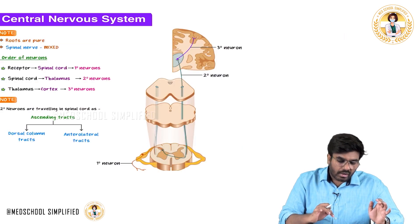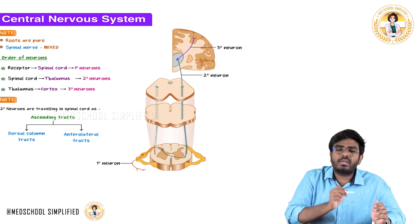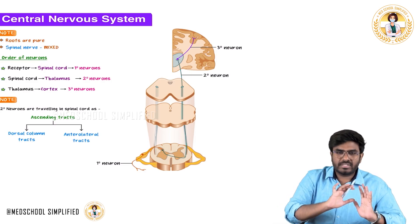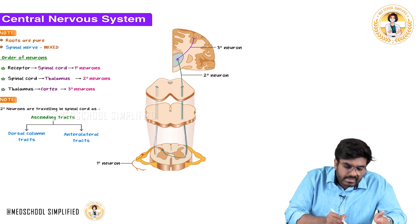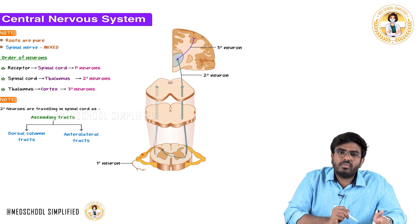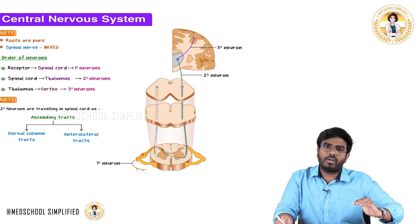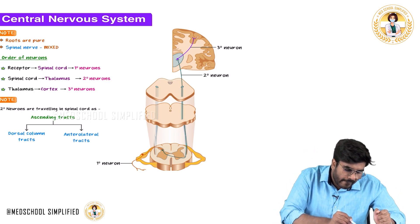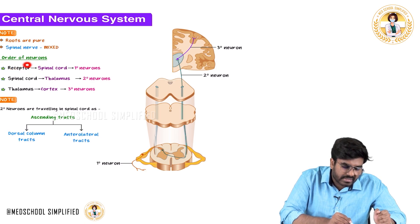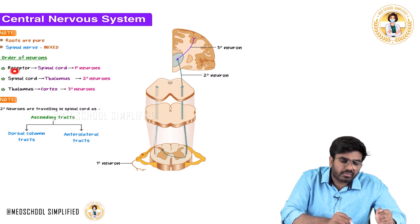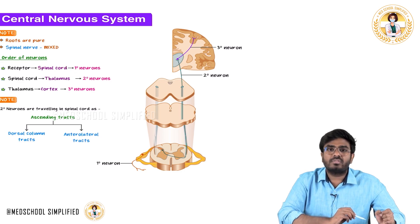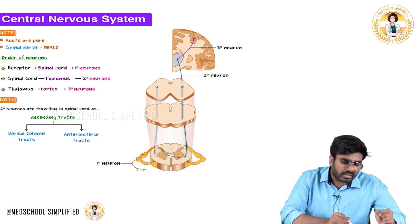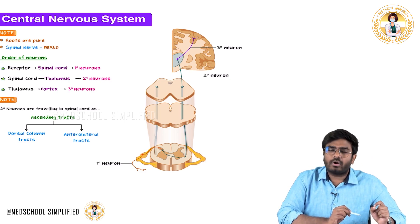Now let's discuss the order of neurons. There is a first-order neuron, a second-order neuron, and a third-order neuron. The first-order neurons start from the level of the receptor and extend up to the spinal cord. They are attached to the receptor and carry information to the spinal cord.